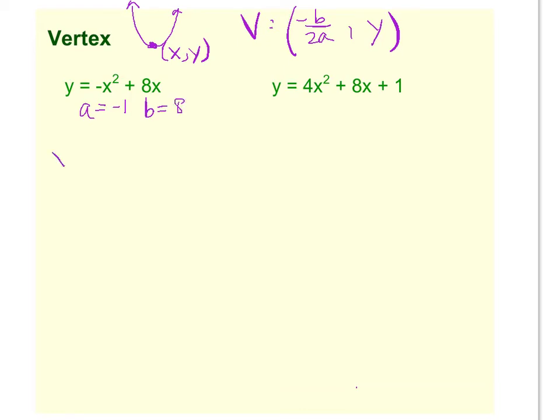So we'll find the x first, so x equals negative 8, so there's your negative b, over 2 times negative 1, so that's negative 8 over negative 2, which gives us a positive 4. So we just found the x value of your vertex.